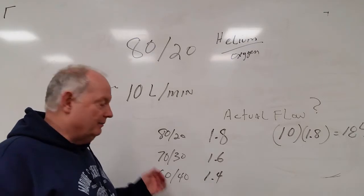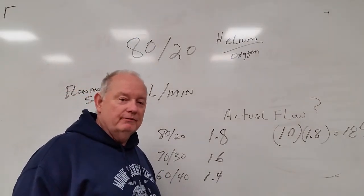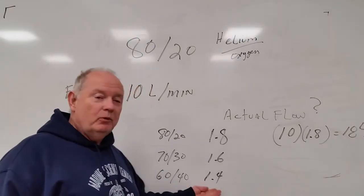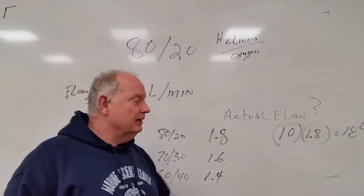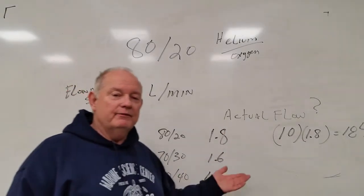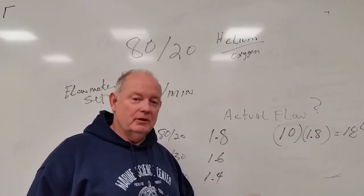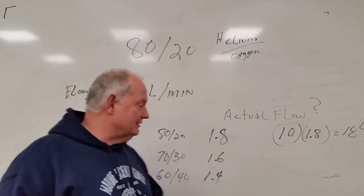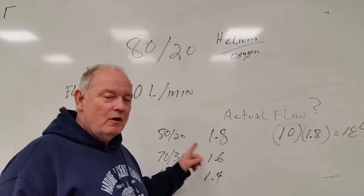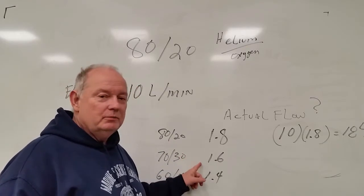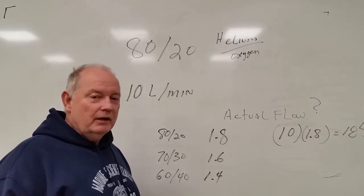If you were using a 60-40 helium-oxygen mix, it's 1.4 flow factor. That's 1.4 times 10, which would give you a total flow of 14 liters per minute.